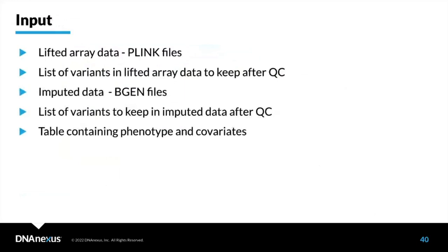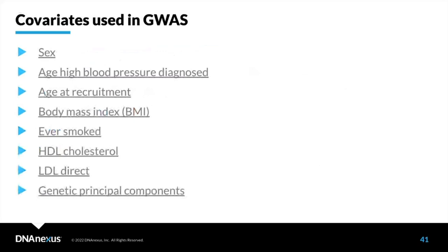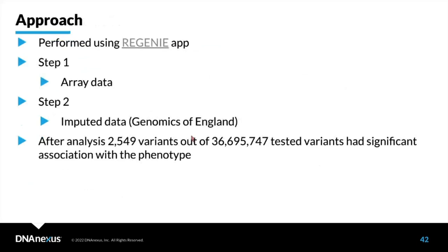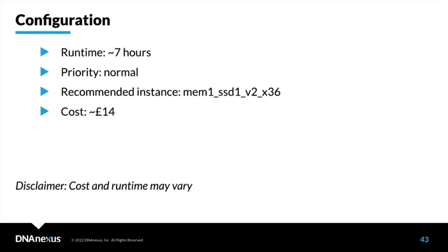The lifted array data are in PLINK format and the imputed data are in BGEN format. We used REGENIE's two-step analysis with array data for step one and imputed data for step two. We ended up with approximately 2,500 variants marked as significant. The analysis took about 7 hours and cost 14 pounds with this instance configuration.